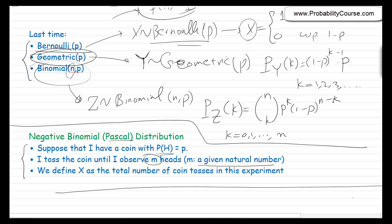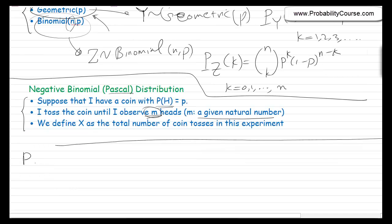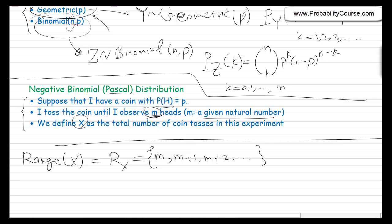This is a generalization of the geometric distribution. In the geometric distribution, we toss the coin until we observe the first head; here, we toss until we observe m heads. The range of x: in order to observe m heads, you need to toss the coin at least m times. So x must be at least m — it could be m+1, m+2, and so on.